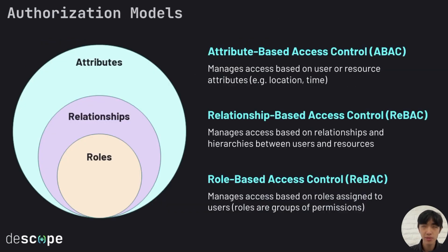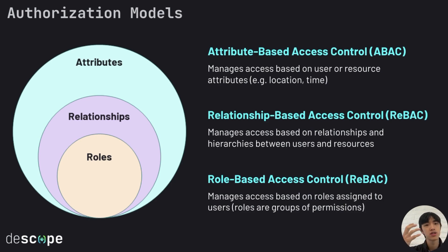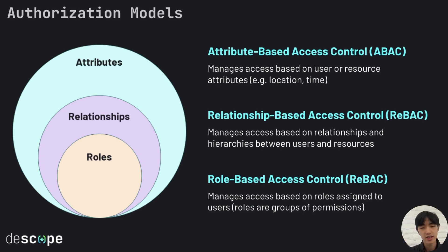When it comes to implementing authorization, there are a couple different models, each with their own approaches. ABAC, or attribute-based access control, uses user attributes like user age or location. So you can be like, only users in Europe can access this content, only users in America can access this, or anything else, maybe document expiration time or something — just attributes of resources within the system.